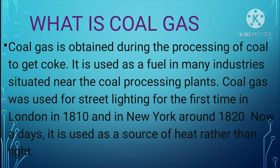What is coal gas? Coal gas is obtained during the processing of coal. It is used as fuel in many industries situated near a coal gas processing plant. Coal gas was used for street lighting for the first time in London in 1810 and in Europe around 1820. Nowadays, it is used as a source of heat rather than light.